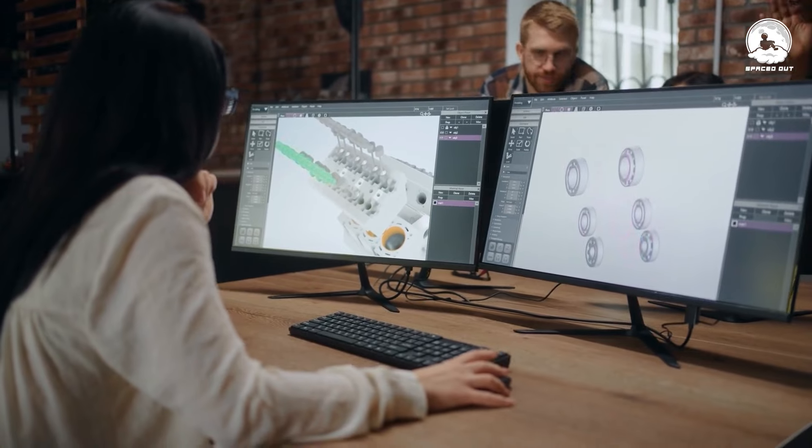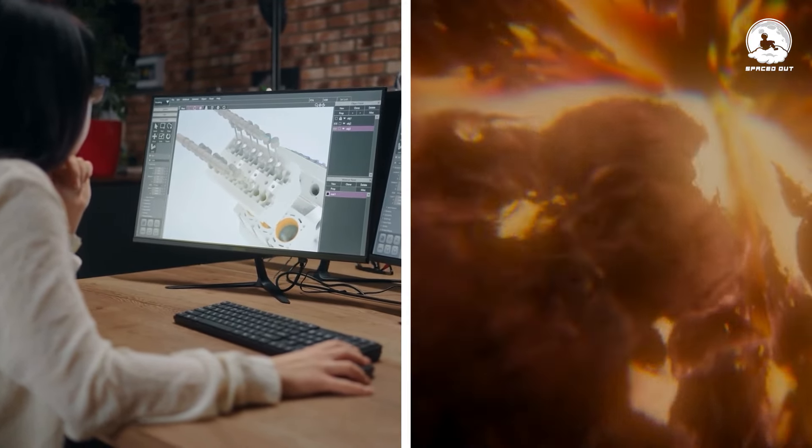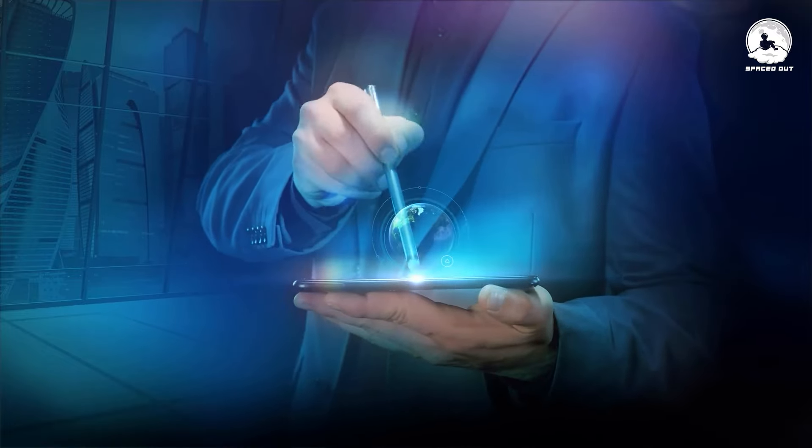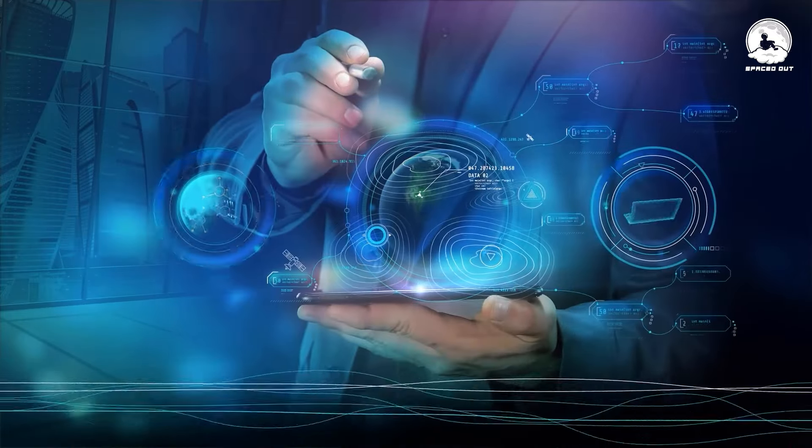Modern technology is designed to be resilient against various types of interference, including solar activity, with engineers and designers considering potential disruptions from space weather and other environmental factors.